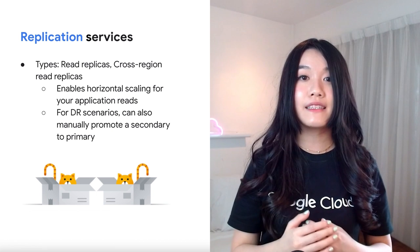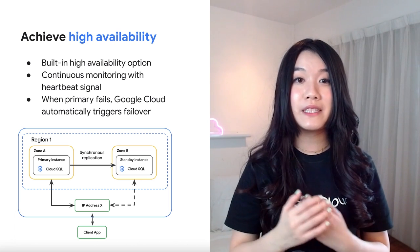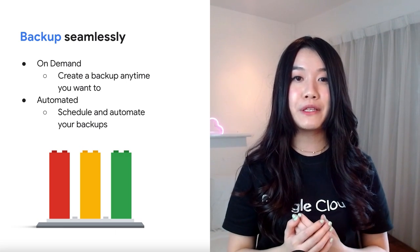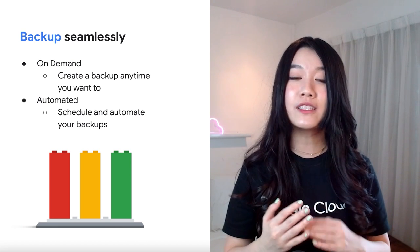Diving a little deeper, Cloud SQL supports read replicas and cross-region read replicas. You can leverage replication to horizontally scale your application needs, and cross-region read replicas can be used for disaster recovery. Cloud SQL also has a built-in high availability option, which helps you to reduce downtime when a zone or instance becomes unavailable — your data will still continue to be available to client applications. Cloud SQL also provides both automated and on-demand backups with point-in-time recovery, helping to protect your data from loss or damage.